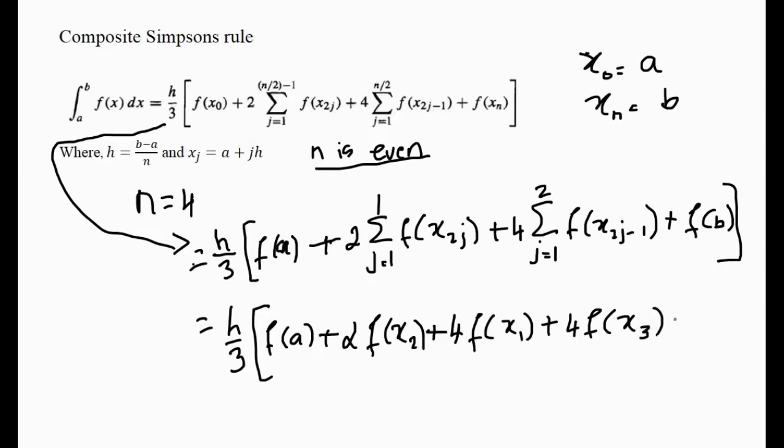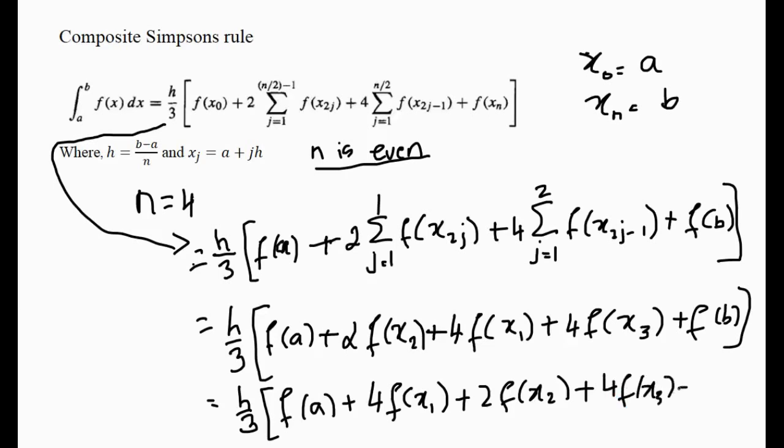Plus f(b). Okay, so now if you just write them in a bit better order, you're going to have f(a) plus 4f(x_1) plus 2f(x_2) plus 4f(x_3) plus f(b). Okay, so that basically is how you would expand this.